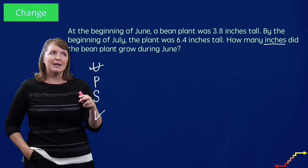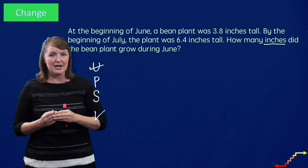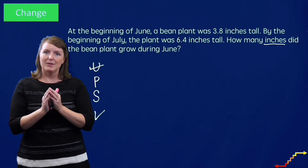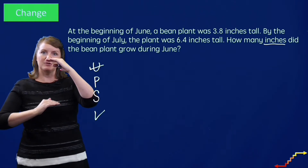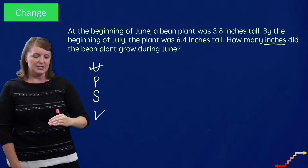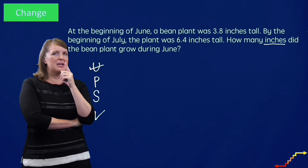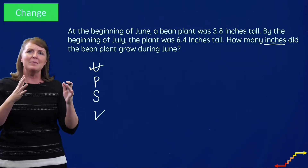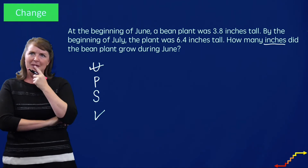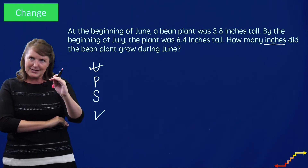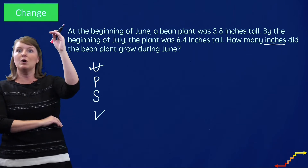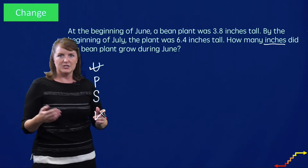Now I'm going to make a plan. I can ask myself the schema questions: is this a total problem where parts are put together for a total? Is this a difference problem where amounts are compared for a difference? Or is this a change problem where one amount increases or decreases? Let me think — is this a change problem? It is a change problem because I have this bean plant and then the bean plant grows. So I'm figuring out the increase in the growth of the bean plant. I'm going to solve this as a change problem.